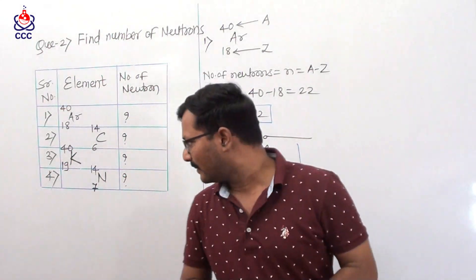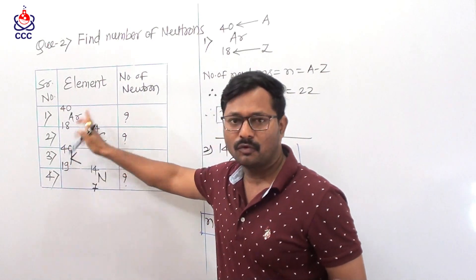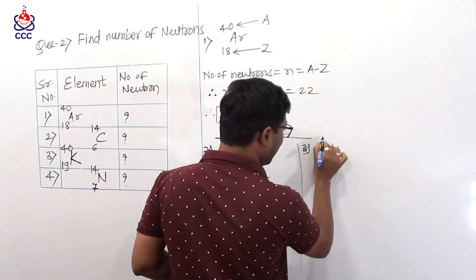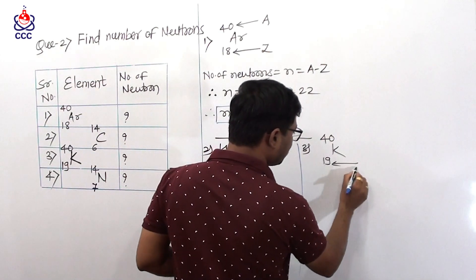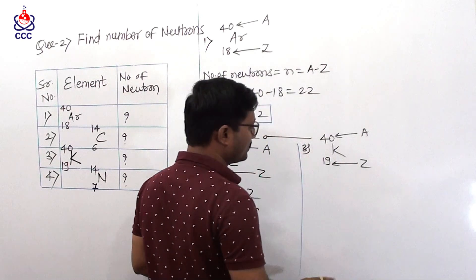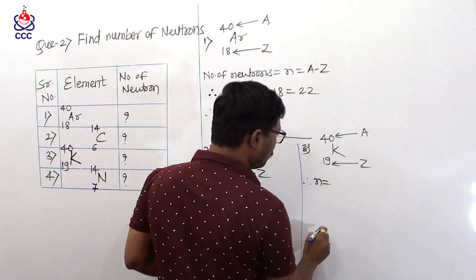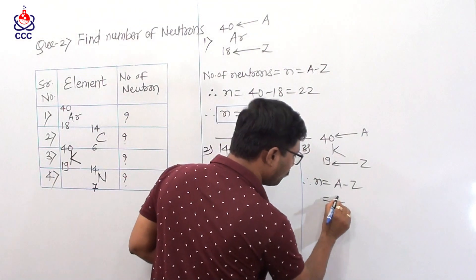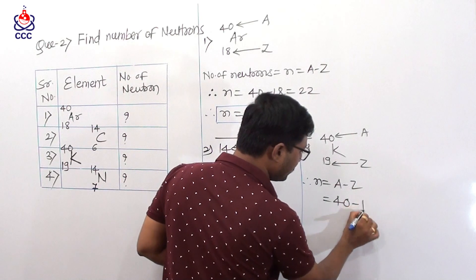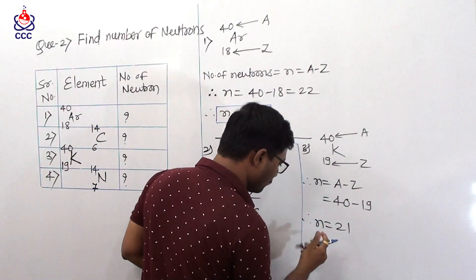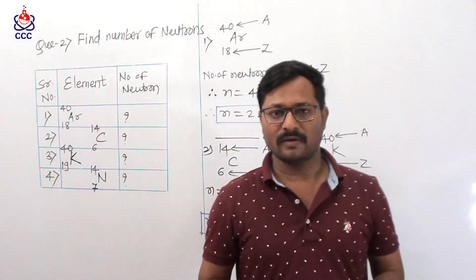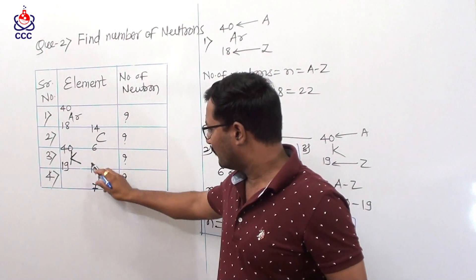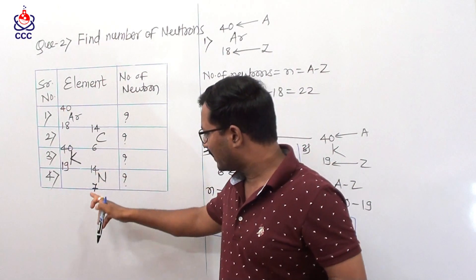Third example: potassium, atomic number 19, atomic mass number 40. So 19 is the atomic number and 40 is the atomic mass number. Number of neutrons equals A minus Z. A is 40, Z is 19. Therefore number of neutrons equals 21. Last example: nitrogen N, atomic number 7, atomic mass number 14. Number of neutrons equals A minus Z, which is 14 minus 7 equals 7.